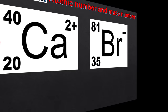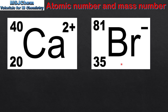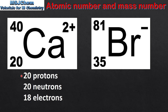Next we look at ions. We have a calcium ion on the left and a bromide ion on the right. The calcium ion has a 2+ charge and the bromide ion has a 1- charge. The atomic number of calcium is 20, therefore it has 20 protons in the nucleus. The mass number is 40, so 40 minus 20 gives us 20 neutrons. Because it's a 2+ ion it's lost 2 electrons, so we subtract 2 from the number of protons to give us 18 electrons.